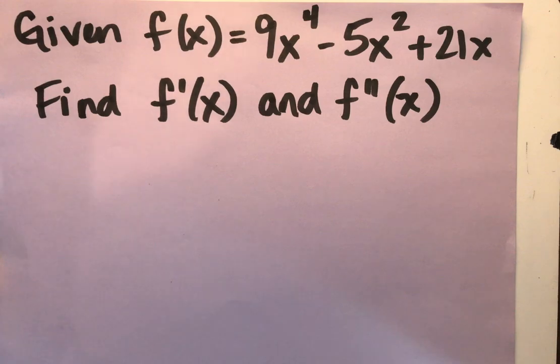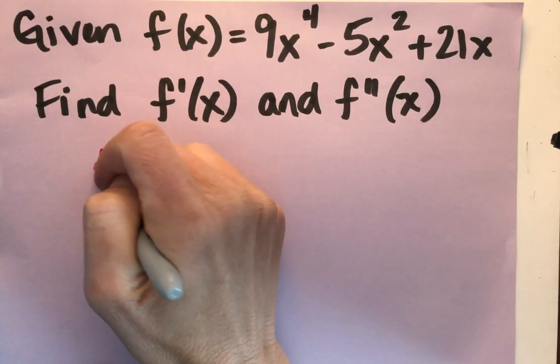And I'm using that d word, but keep in mind that d word, derivative, always associated with the instantaneous rate of change. So without further ado, let's find f prime of x.